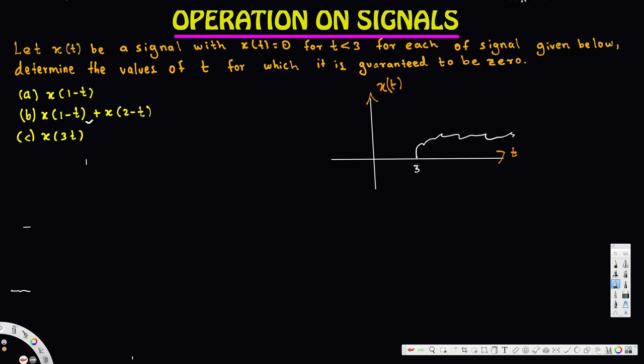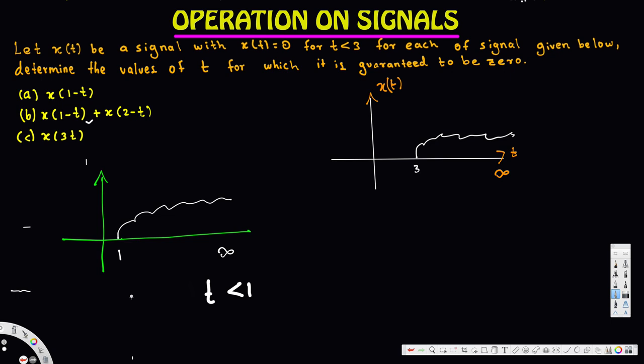For part C, we have x(3t). The original x(t) is nonzero from 3 to infinity. A factor of 3t means the signal is compressed by 3, so we divide the starting point by 3: 3 divided by 3 equals 1. So x(3t) starts from 1 and goes to infinity. Therefore x(3t) is 0 when t is less than 1. That's the answer for part C.